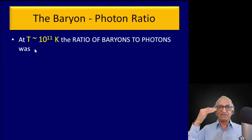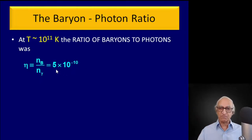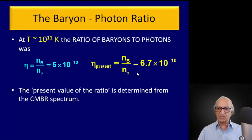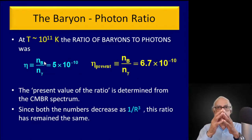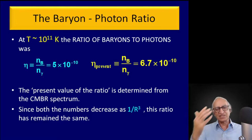At temperatures in excess of 10¹⁰ Kelvin, the ratio of baryons to photons η — the number density of baryons divided by the number density of photons — was a very small number. Photons outnumber baryons by a factor of about 5 × 10⁻¹⁰. Today it is 6.7 × 10⁻¹⁰. This number hasn't changed because both the baryon number density and the photon number density decrease as 1/R³, so the ratio never changes. It was fixed in the very early universe.